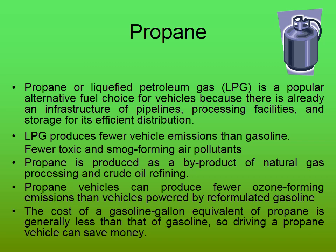LPG produces fewer vehicle emissions than gasoline — fewer toxic and smoke-forming air pollutants. Propane is produced as a byproduct of natural gas processing and crude oil refining. Propane vehicles can produce fewer ozone-forming emissions than vehicles powered by reformulated gasoline. The cost per gallon equivalent of propane is generally less than that of gasoline, so driving a propane vehicle can save money. Nowadays you can observe LPG pumps available throughout India.